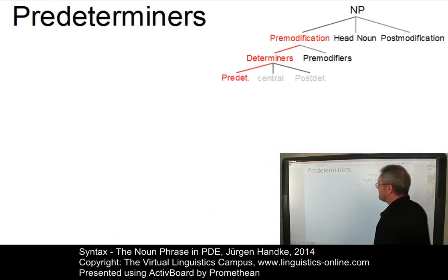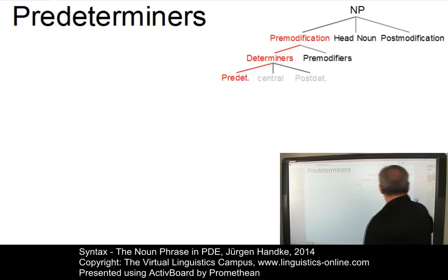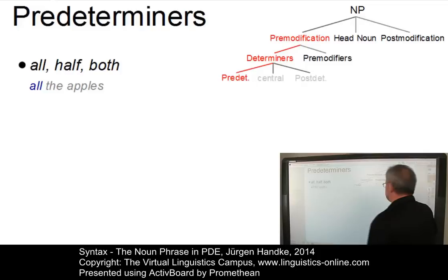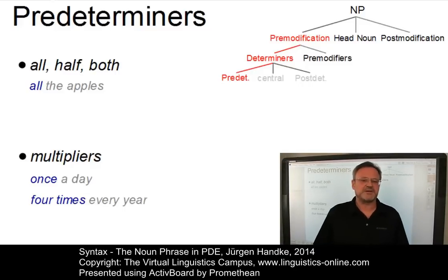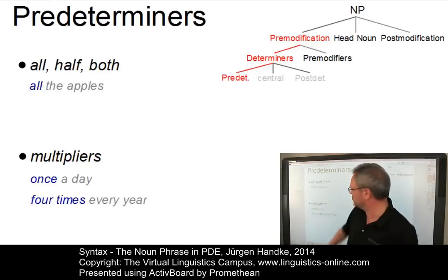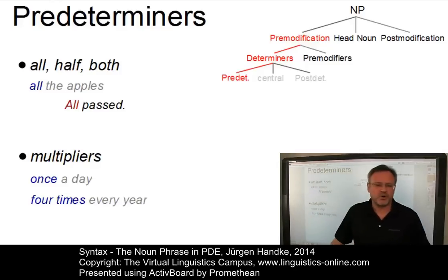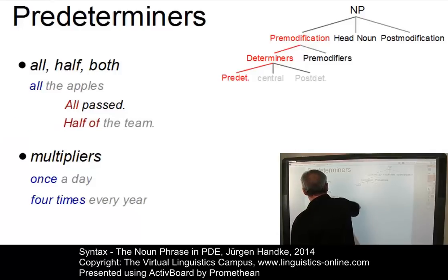Let's now look at the predeterminers. Predeterminers form a class where the members are mutually exclusive and precede those central determiners with which they can co-occur. We can distinguish two subsets. The first contains elements such as 'all', 'half', 'both', and so on — as in 'all the apples'. The second set contains multipliers such as 'twice', 'double', 'once', etc. — so we have examples like 'once a day' or 'four times every year'. Note that the predeterminers of the first group can also be used pronominally, and they are often followed by an 'of' phrase — such as 'all of the students' or 'half of the team'.